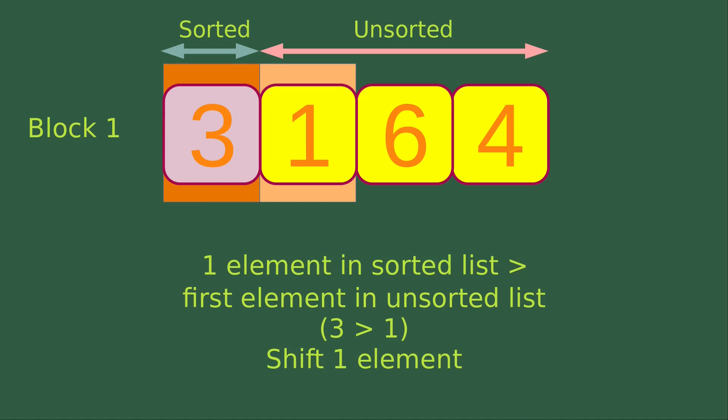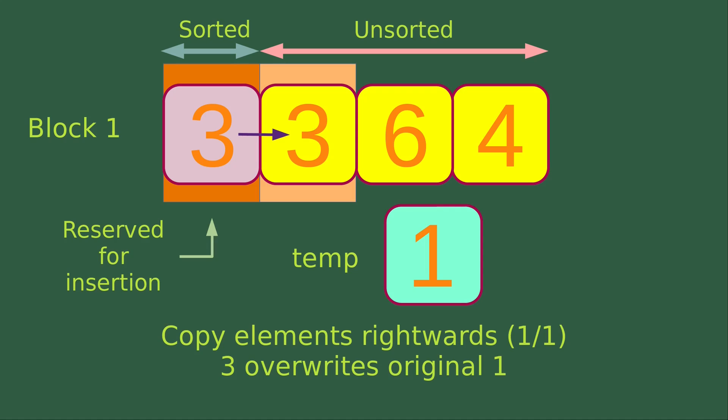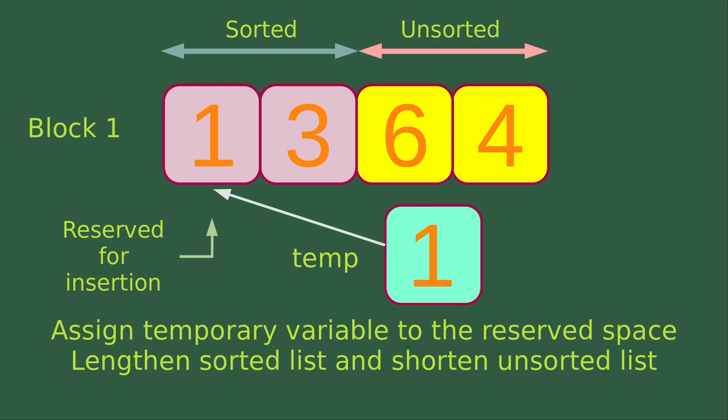We also see that there is one element in the sorted list which is larger than the first element in the unsorted list — here 3 is larger than 1 — so we have to shift only one element. We first assign the first element in the unsorted list to a variable called temp. Now temp has a value of 1 and the first element in the sorted list is reserved for insertion. We copy the elements rightwards once, so the value which was 1 is now 3. We can see that 3 overrides the original value of 1.